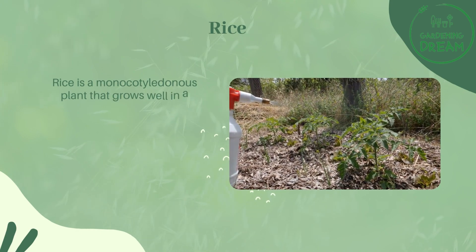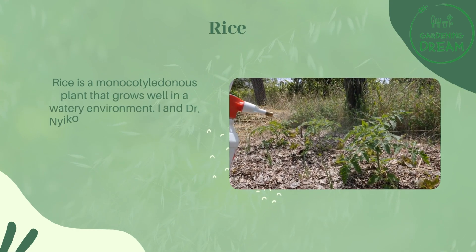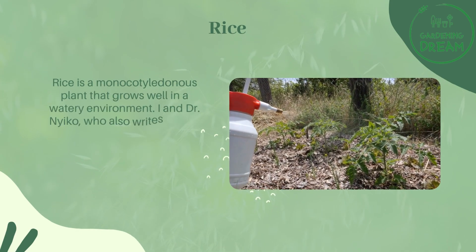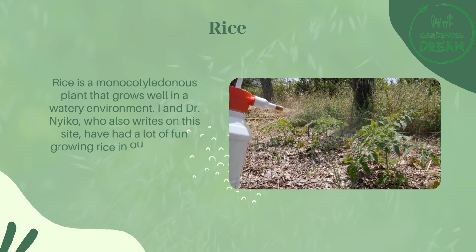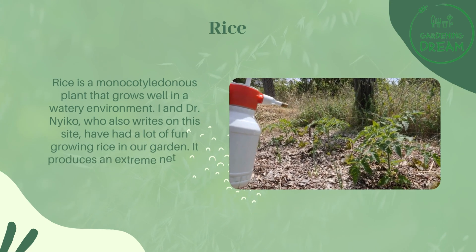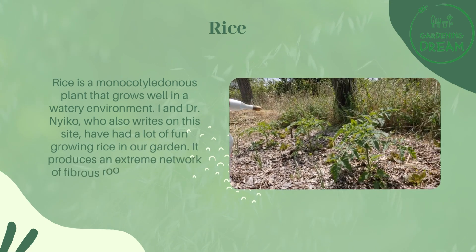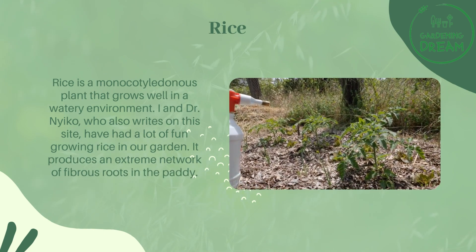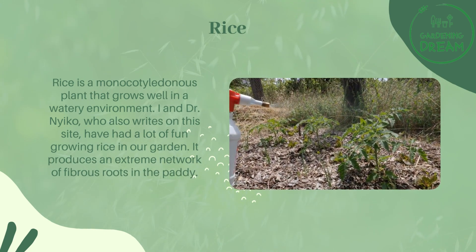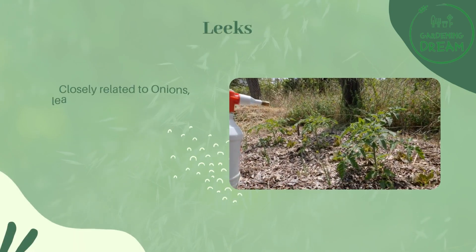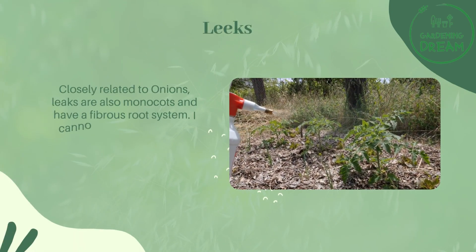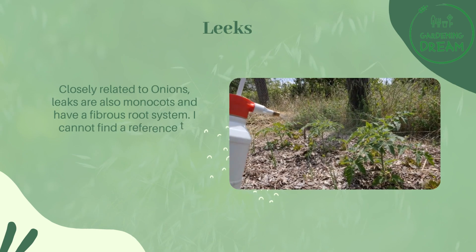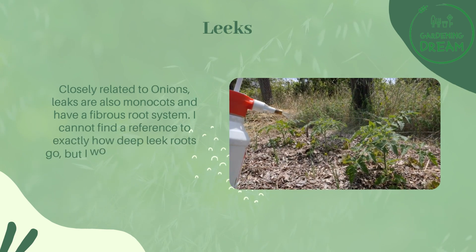Rice is a monocotyledonous plant that grows well in a watery environment. My colleague Dr. Naiko and I have had a lot of fun growing rice in our garden. It produces an extreme network of fibrous roots in the paddy. Leeks, closely related to onions, are also monocots and have a fibrous root system.